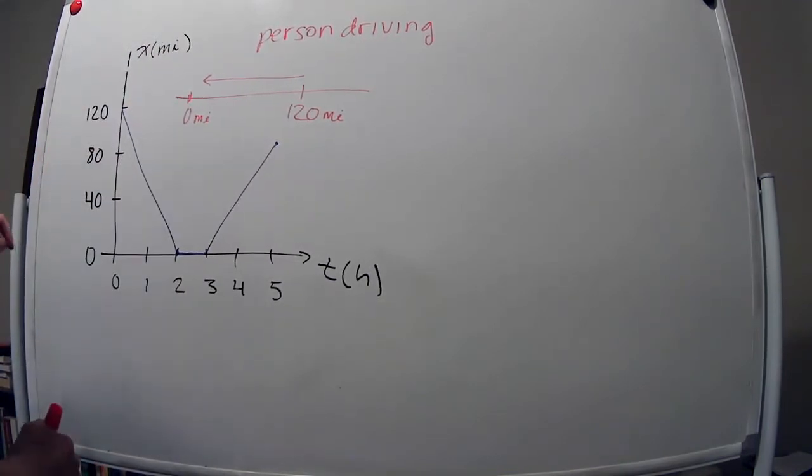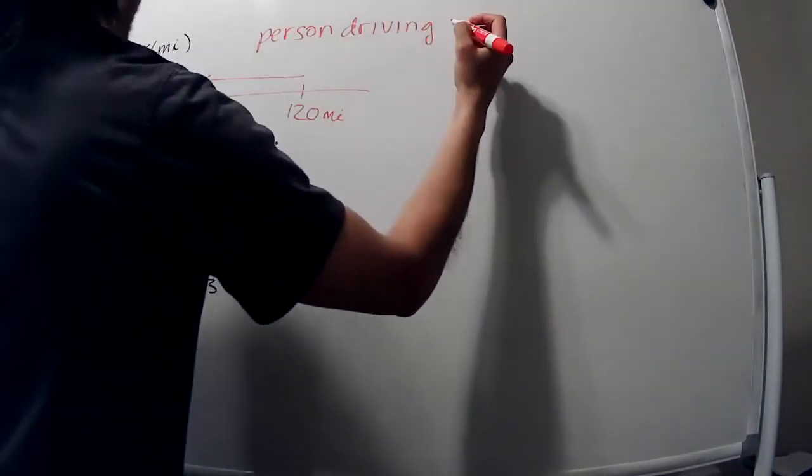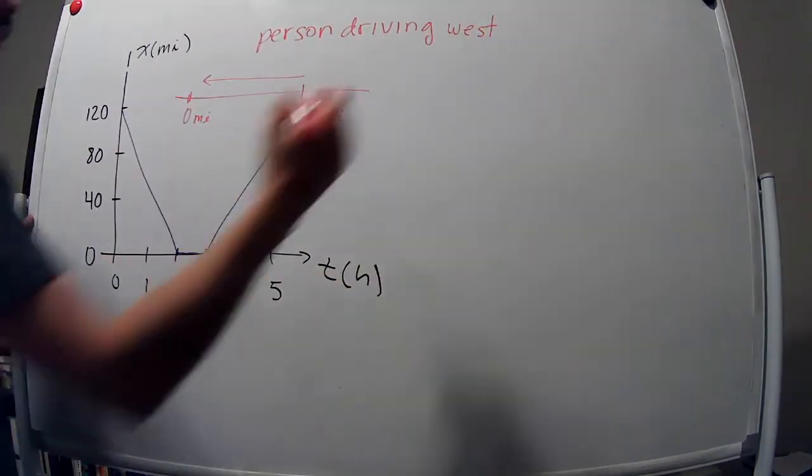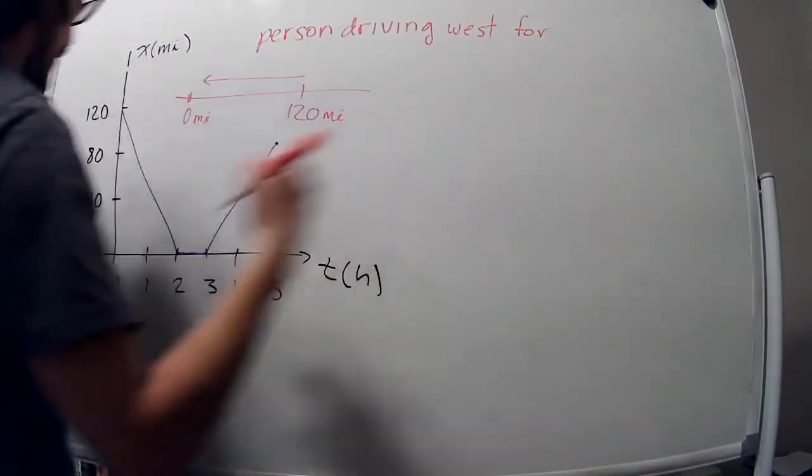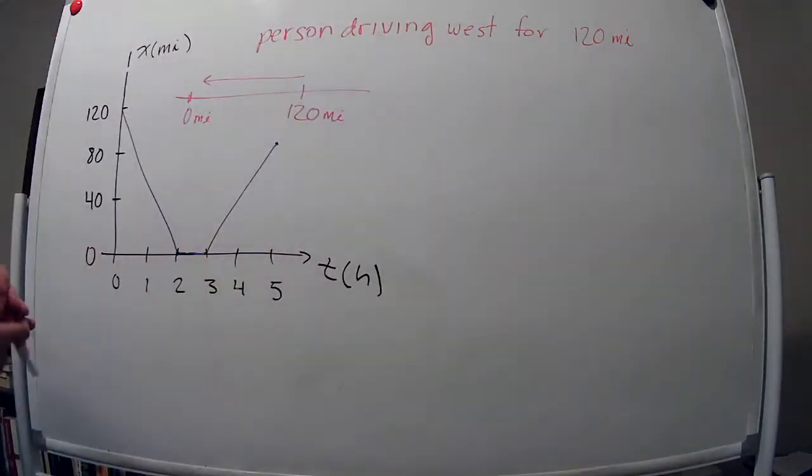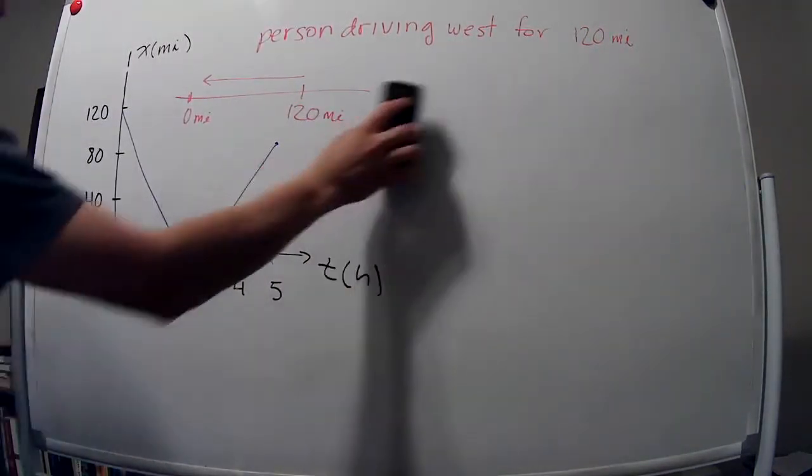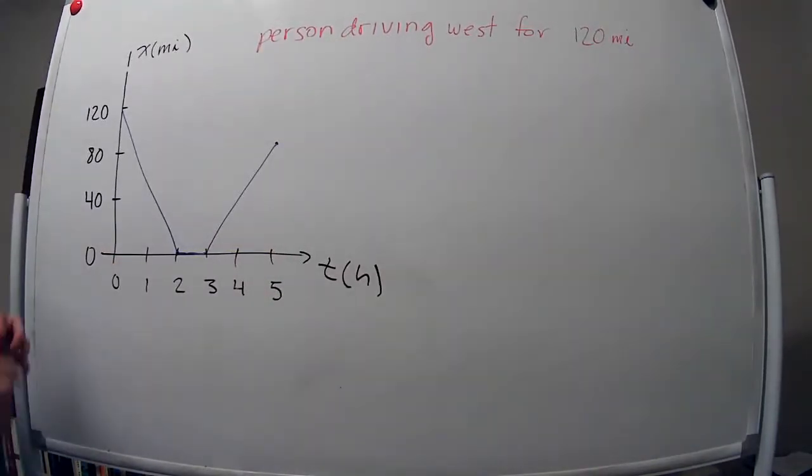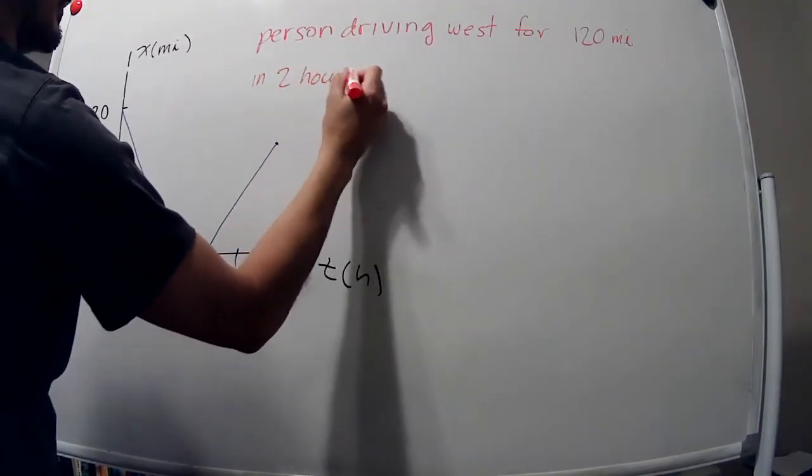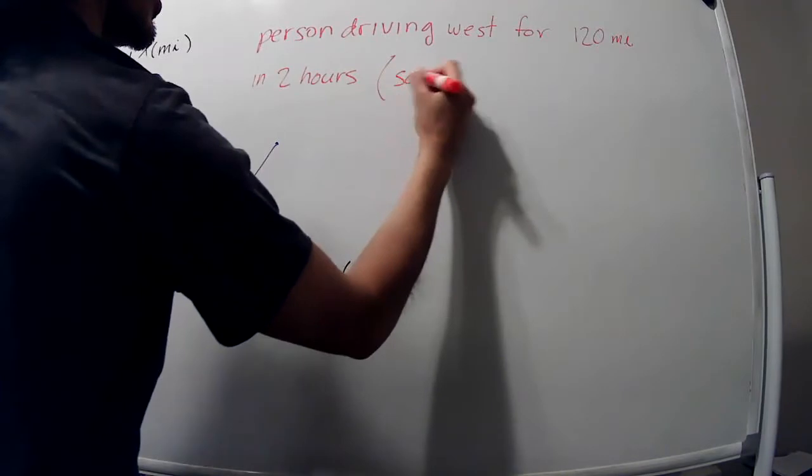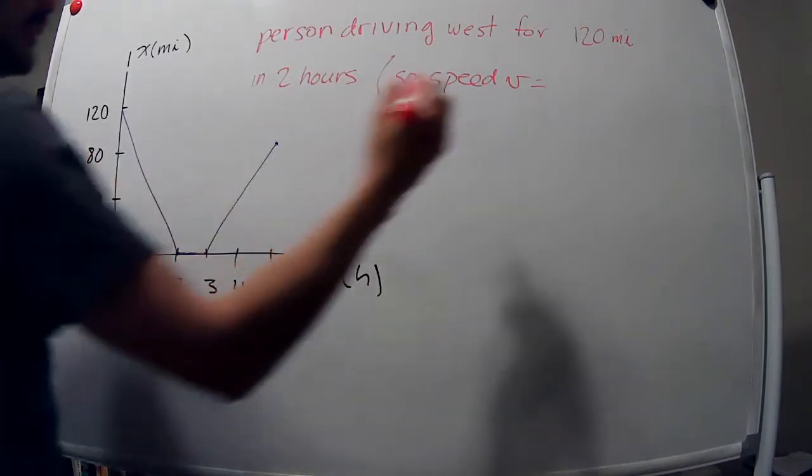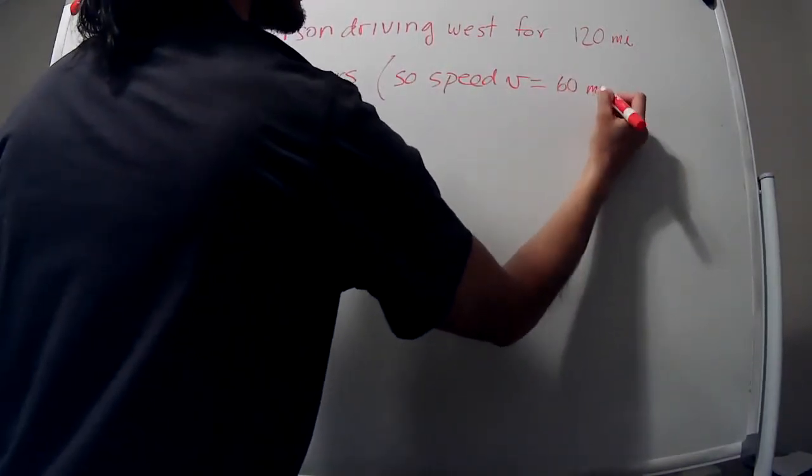So let's just say that he's going west. First, person driving west for 120 miles in two hours. So speed is 60 miles per hour.